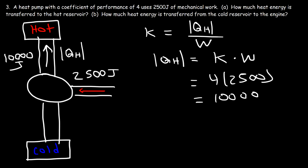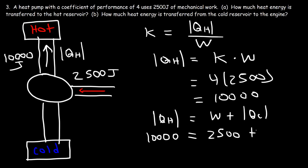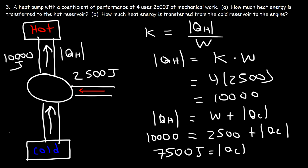Part B: how much heat energy is transferred from the cold reservoir to the engine? Since QH equals W plus QC, we have 10,000 equals 2,500 plus QC. So QC equals 7,500 joules. That's how much thermal energy is being pumped from the cold reservoir to the engine. Hopefully this video gave you a good understanding of heat pumps and refrigerators.